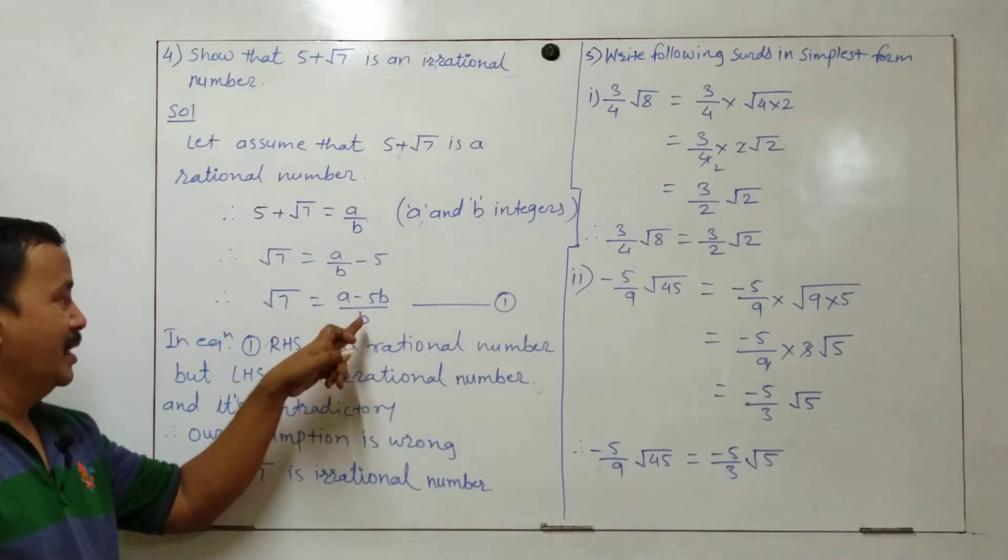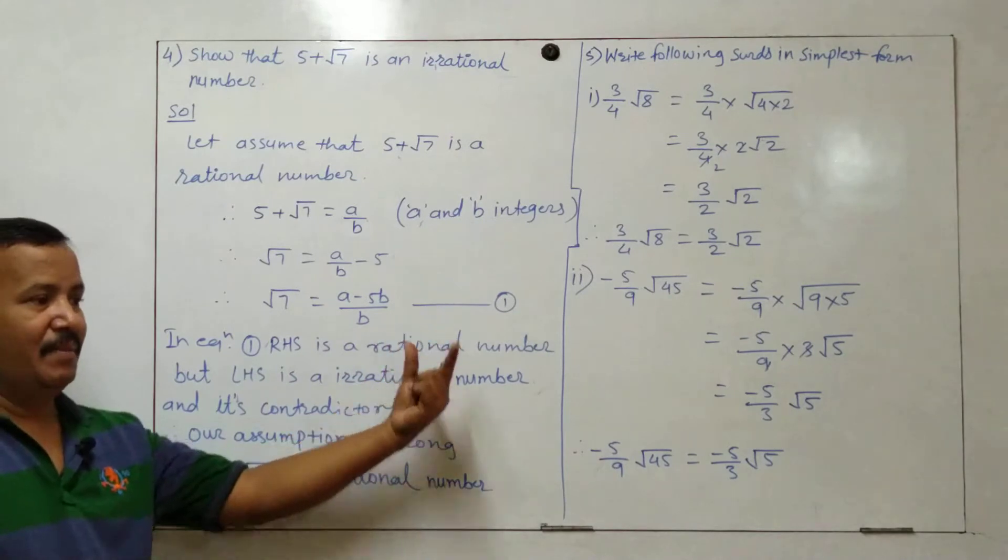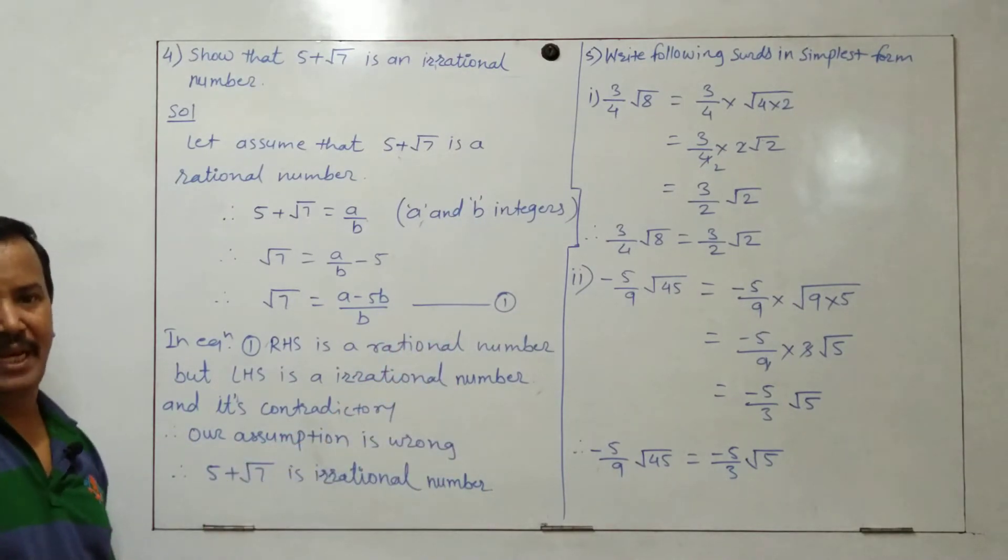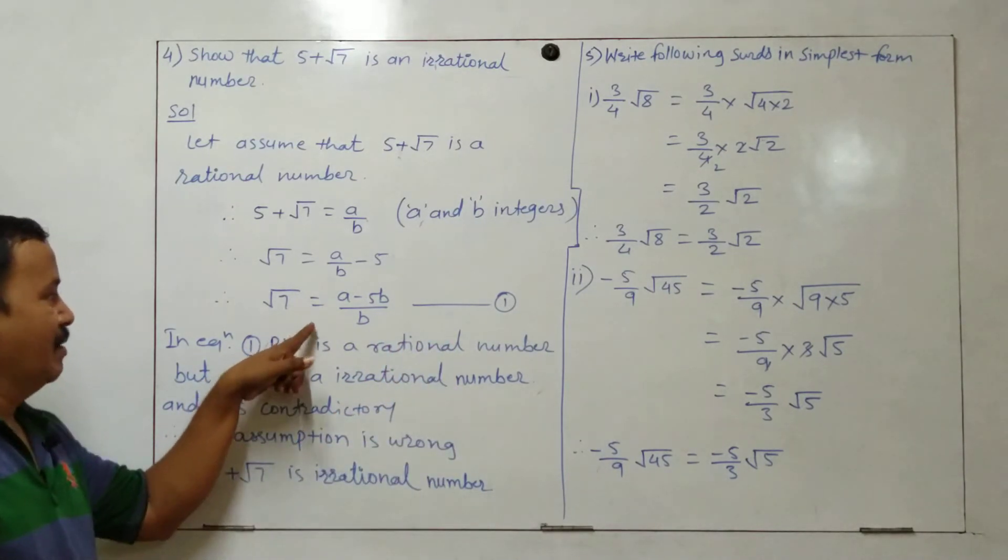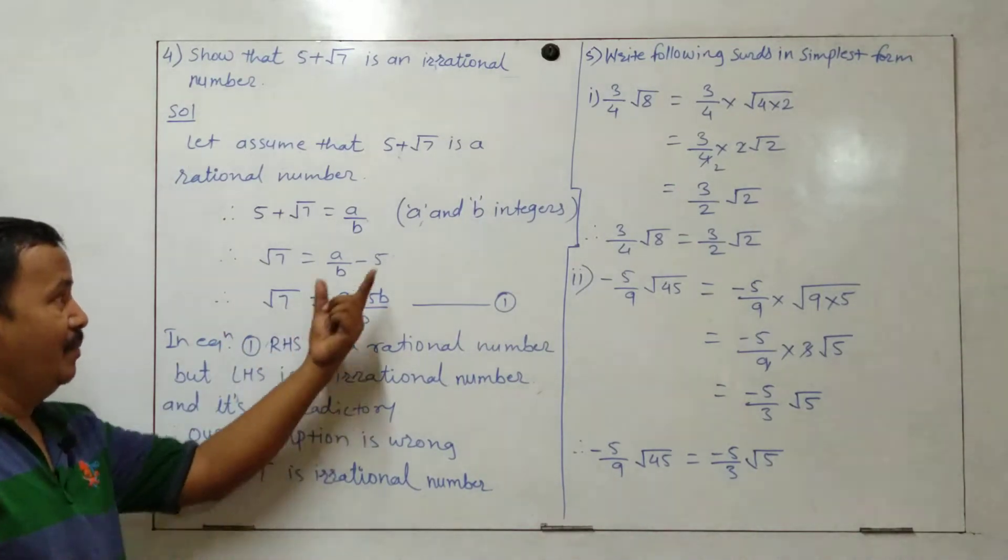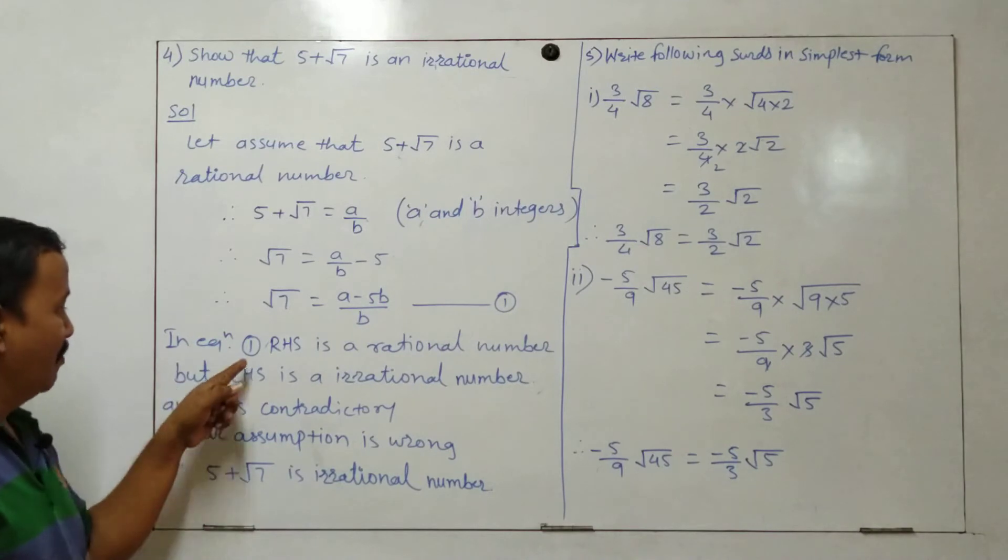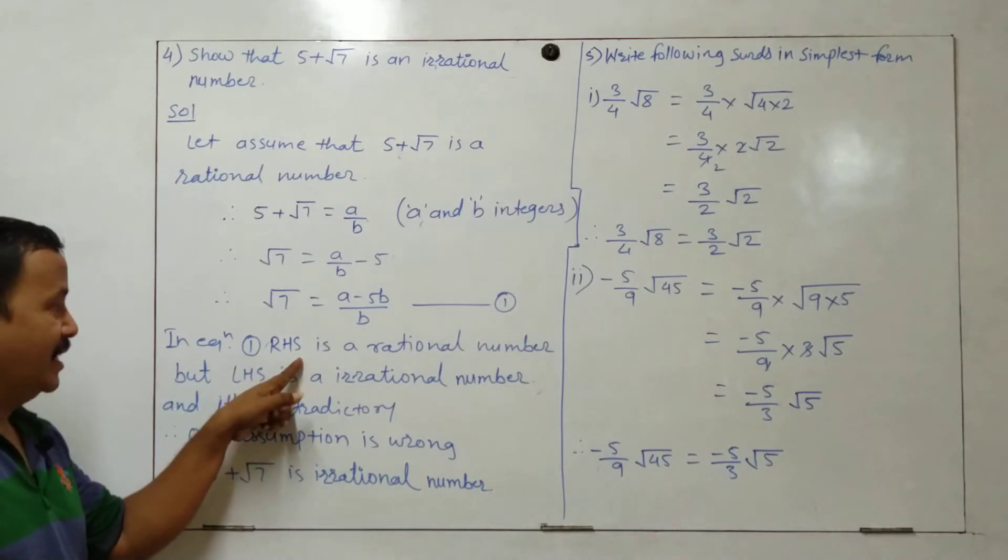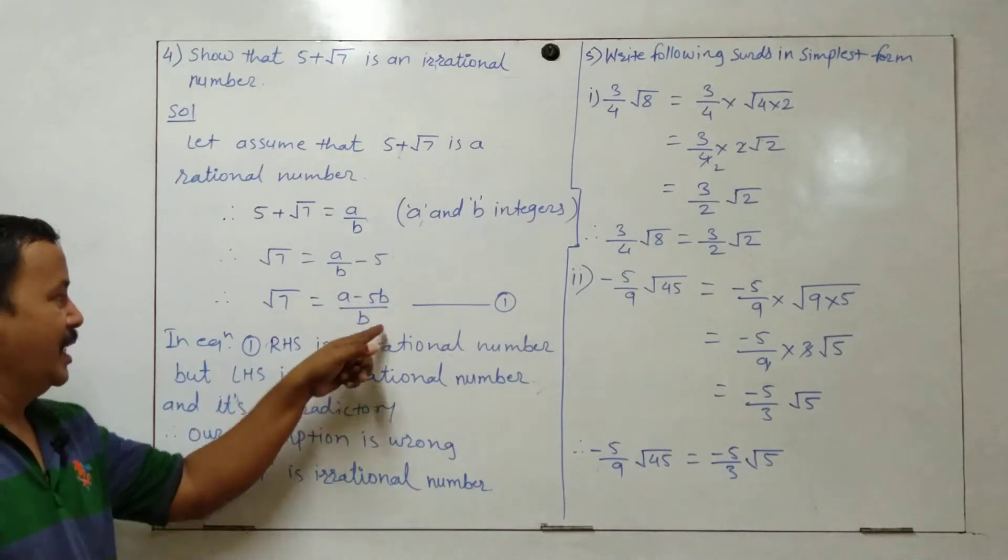We have equation 1. Root 7 is equal to a minus 5b upon b. Now, since a and b are integers, in equation 1, the right hand side is a rational number.